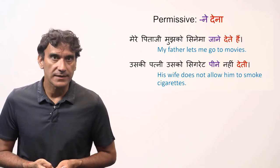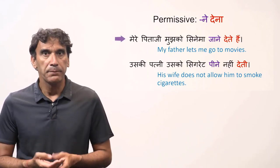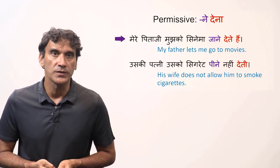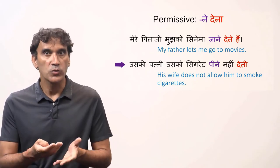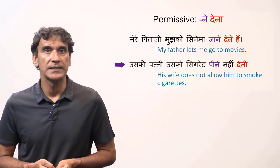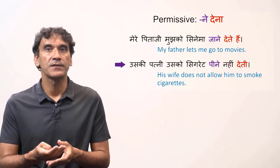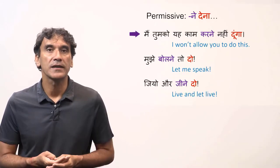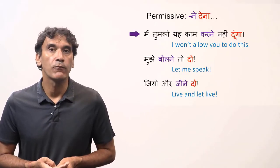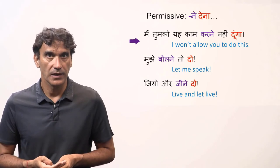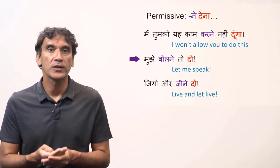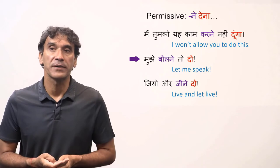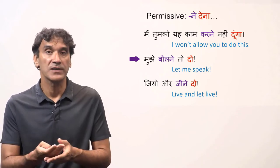Let's take some example sentences. 'Mere pita ji mujhko cinema jane dete hain' — my father lets me go to movies. His wife doesn't allow him to smoke cigarettes. I won't allow you to do this. 'Let me speak' or 'allow me to speak' — here the verb 'dena' is in the imperative, the request form.